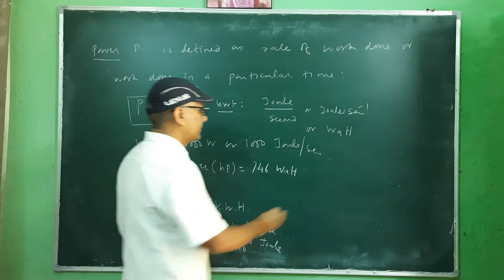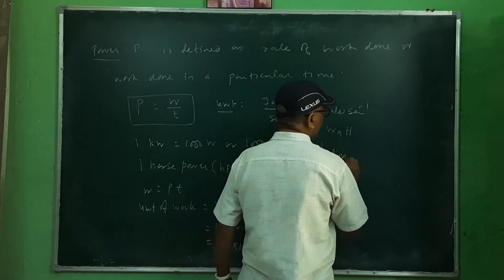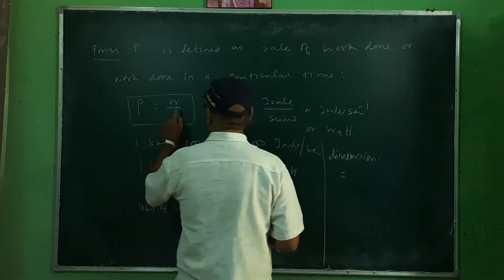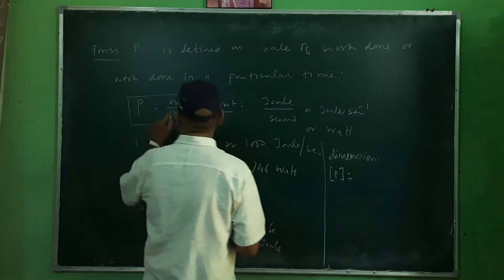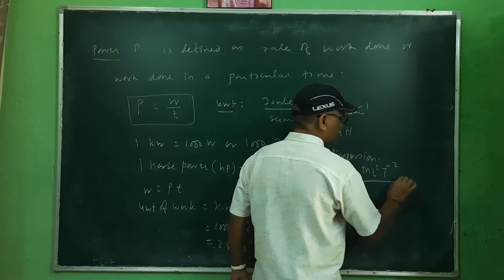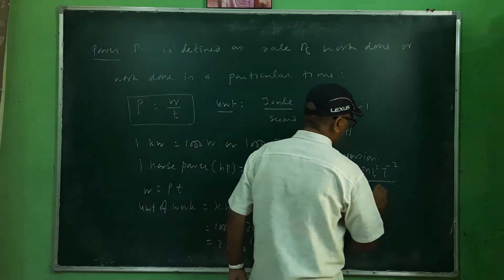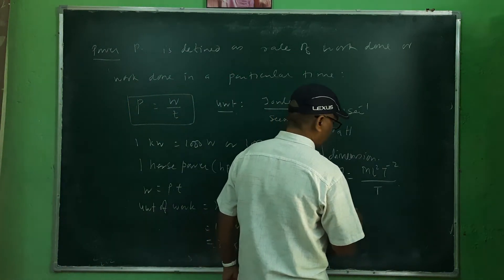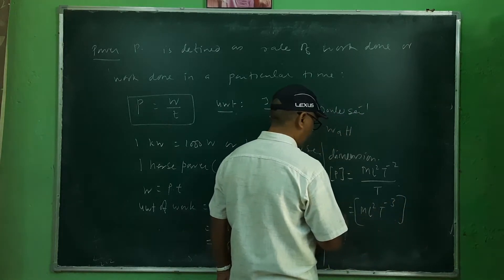The dimension of power: power equals work divided by time. Work has dimensions ML²T⁻², and dividing by T gives the dimensional formula of power as ML²T⁻³.